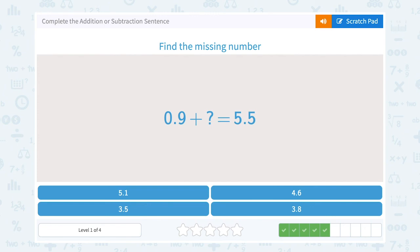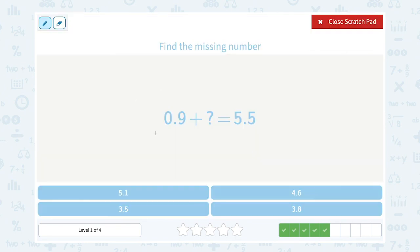0.9 plus what number would equal 5.5? Well, this is where you could work backwards. If I know I'm adding some number to 0.9 and it gives me 5.5 as my answer, I can work backwards and subtract. The whole thing, 5.5 minus 0.9, should leave me with what the second number was or what I had to add to it.